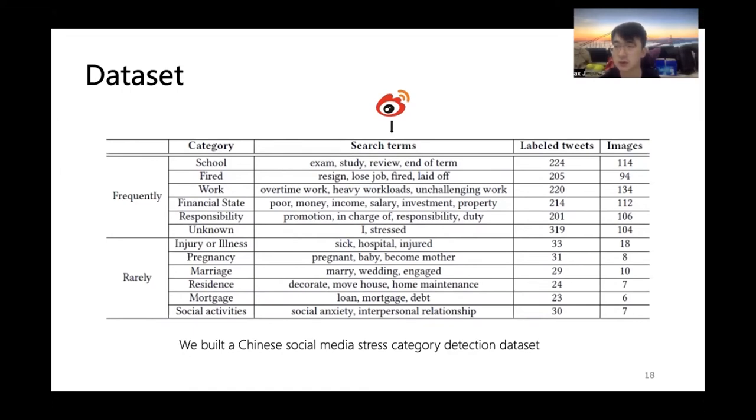We employed four doctoral students who major in computational psychology and are active on social media as annotators to guarantee annotation quality. Only if more than two annotators believe that one tweet has a major stress and the major categories they labeled are consistent, the tweet is annotated as this category. Finally, we got 1,553 tweets and 720 images in total. The average tweet number of frequently appeared category is 231, while for rarely appeared category is 28.